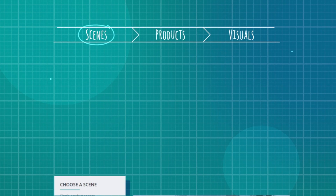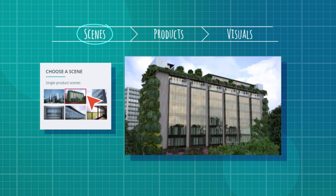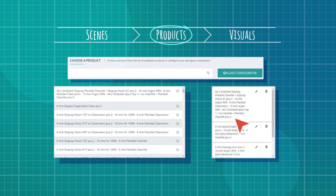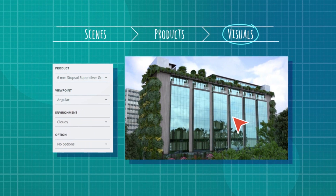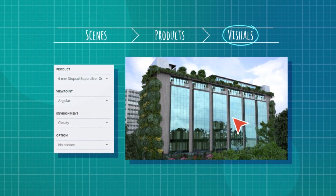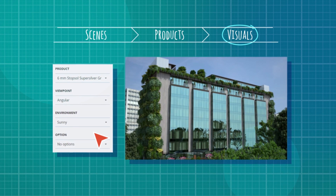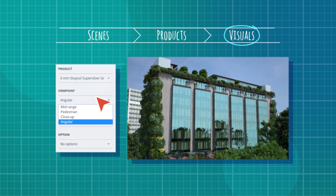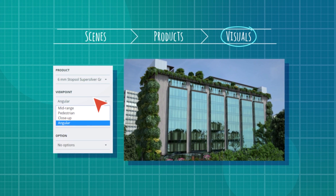Just select the type of building, pick the AGC products you want to try out, and see how it looks. You can also easily modify the natural light and change the angle from which it's viewed to give you a better overall impression.